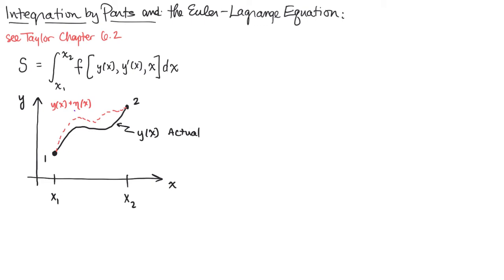And graphically, this eta of x is the vertical separation between the red curve and the black curve, because eta of x is equal to the red minus the black. It's y plus eta minus y, red minus black.